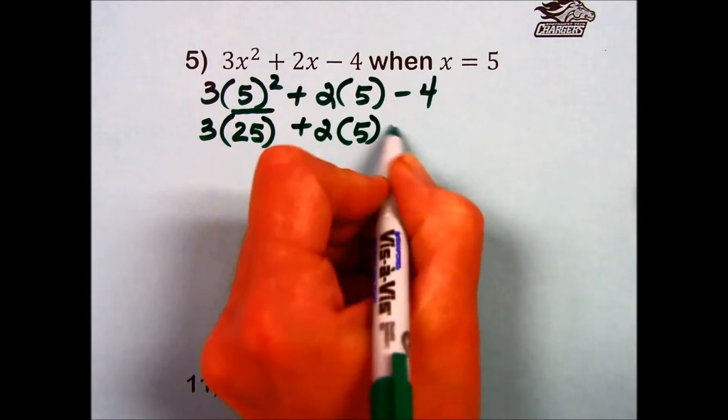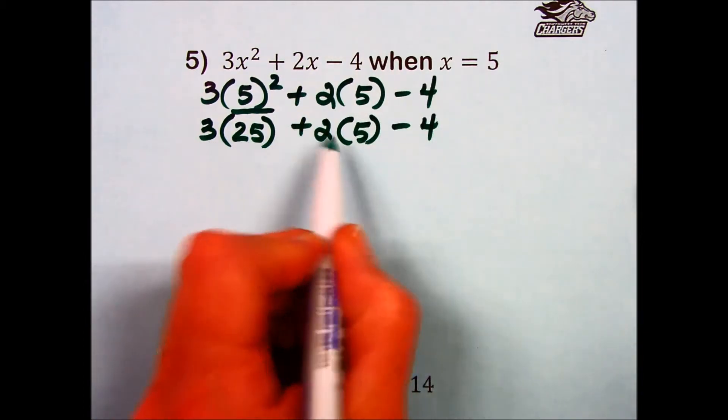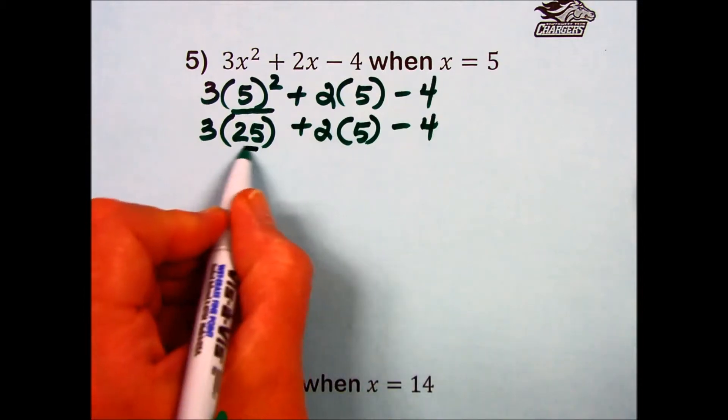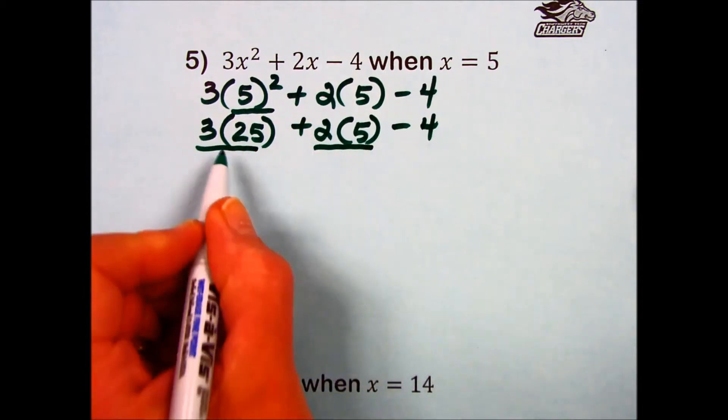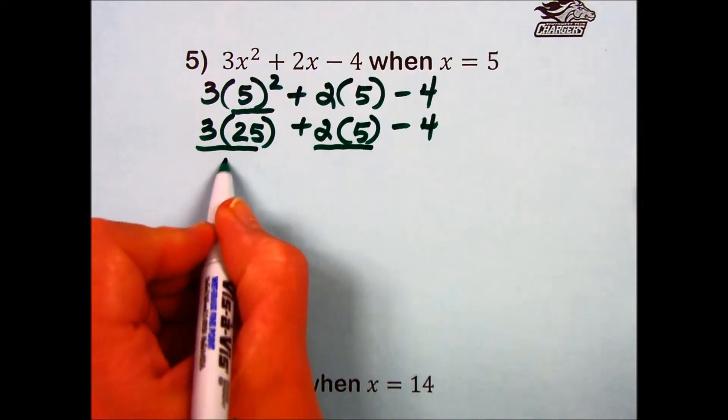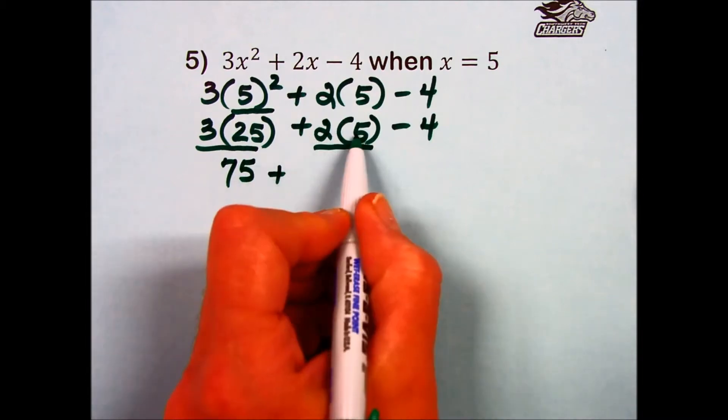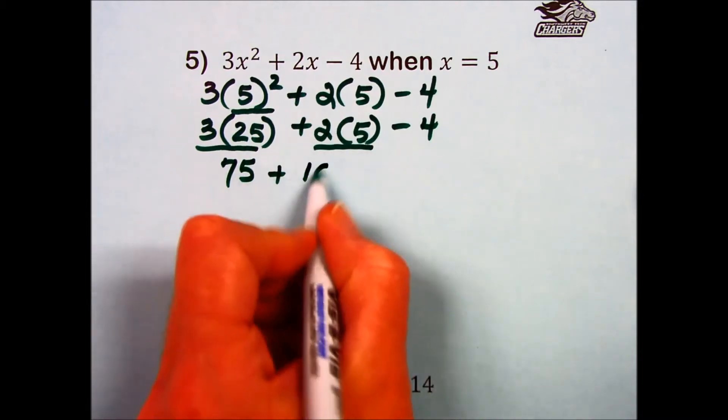And I'm going to just write the rest of these expressions. Next, we have multiplication addition, multiplication subtraction. Well, multiplication left to right takes the priority. So the first multiplication, 3 times 25 is 75. Next is multiplication, 2 times 5 is 10.